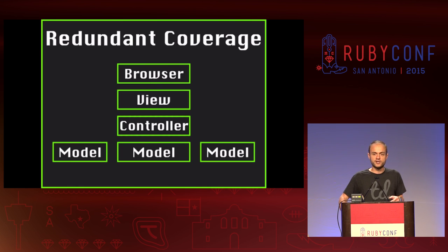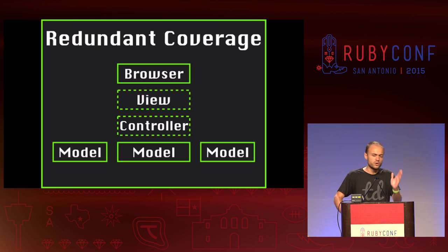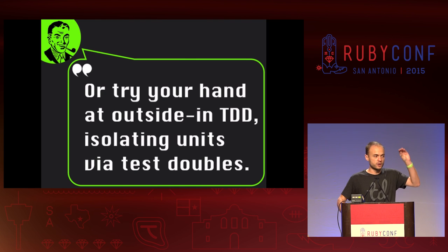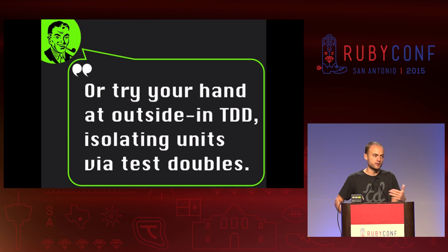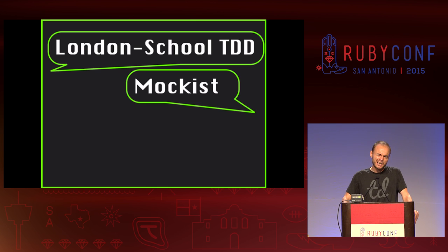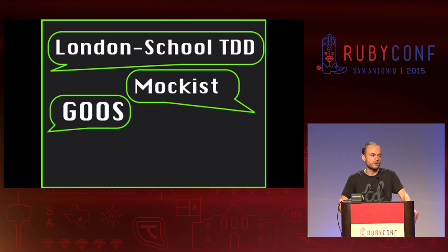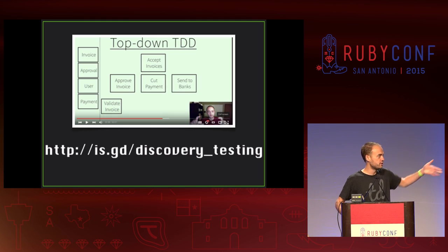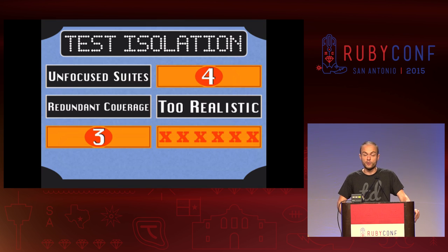One thing we can do is identify a clear set of layers that we test through. For instance, the team might agree that browser tests are valuable, but view and controller tests are mostly redundant, so they test through just the browser and the models. Or, totally different strategy: try outside-in test-driven development, where you test from the outside in but isolate each thing from the stuff it depends on underneath, so you don't have incidental dependencies on other objects in your tests. Some people call that London School TDD, or Mockist TDD, or — I've iterated enough on it that I just call it discovery testing. I recently did a free screencast series on our blog about it.